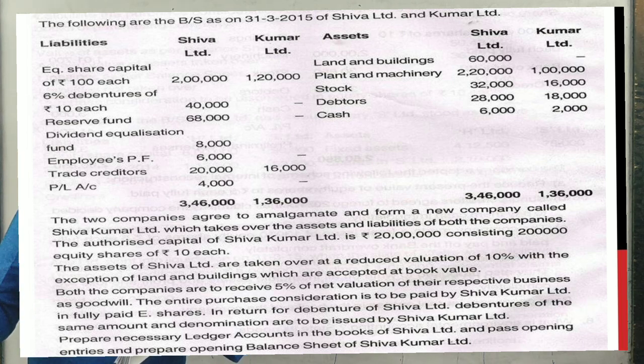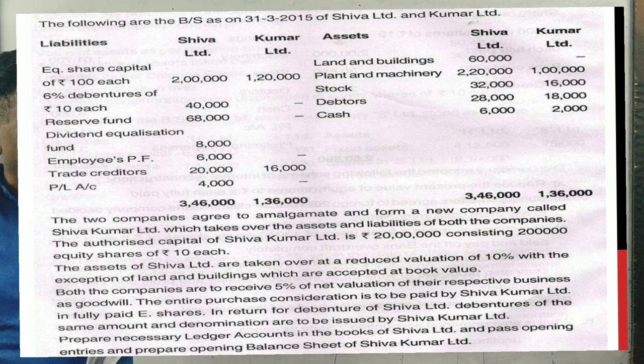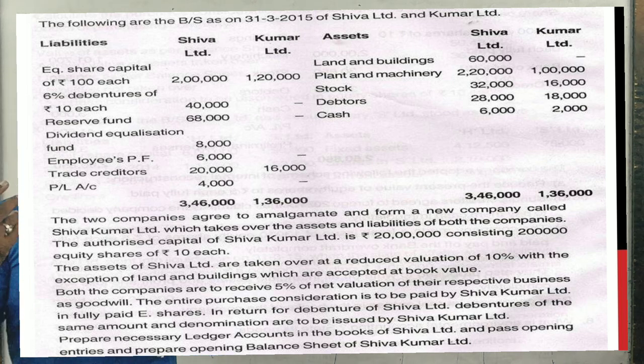Both companies are to receive 5% of net valuation of their respective business as goodwill. Entire purchase consideration is to be paid by Shiva Kumar Limited in fully paid equities. In return for debentures of Shiva Limited, debentures of same amount and denomination are issued by Shiva Kumar Limited. Prepare necessary ledger accounts and opening entries in the books of Shiva Kumar Limited.